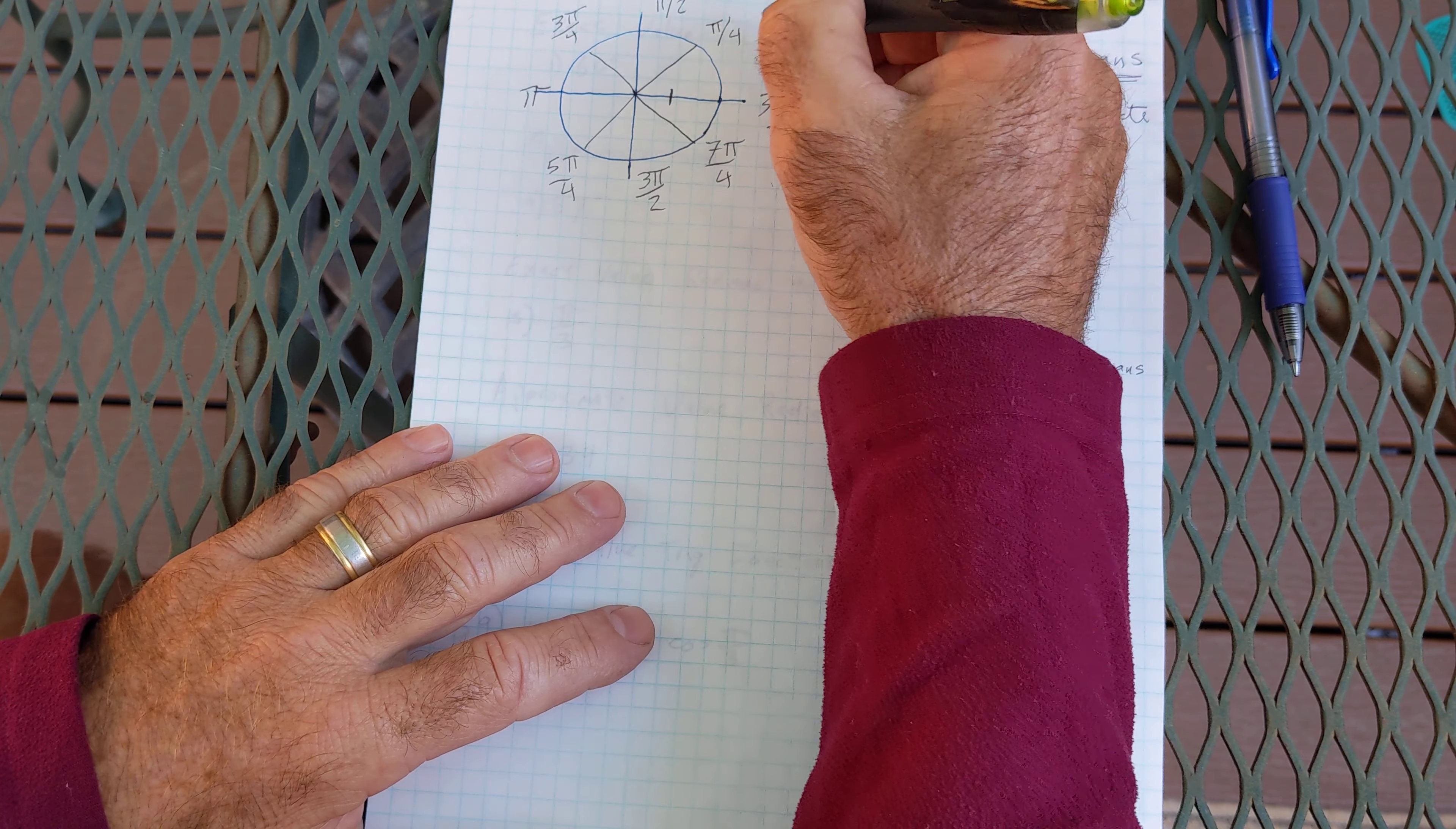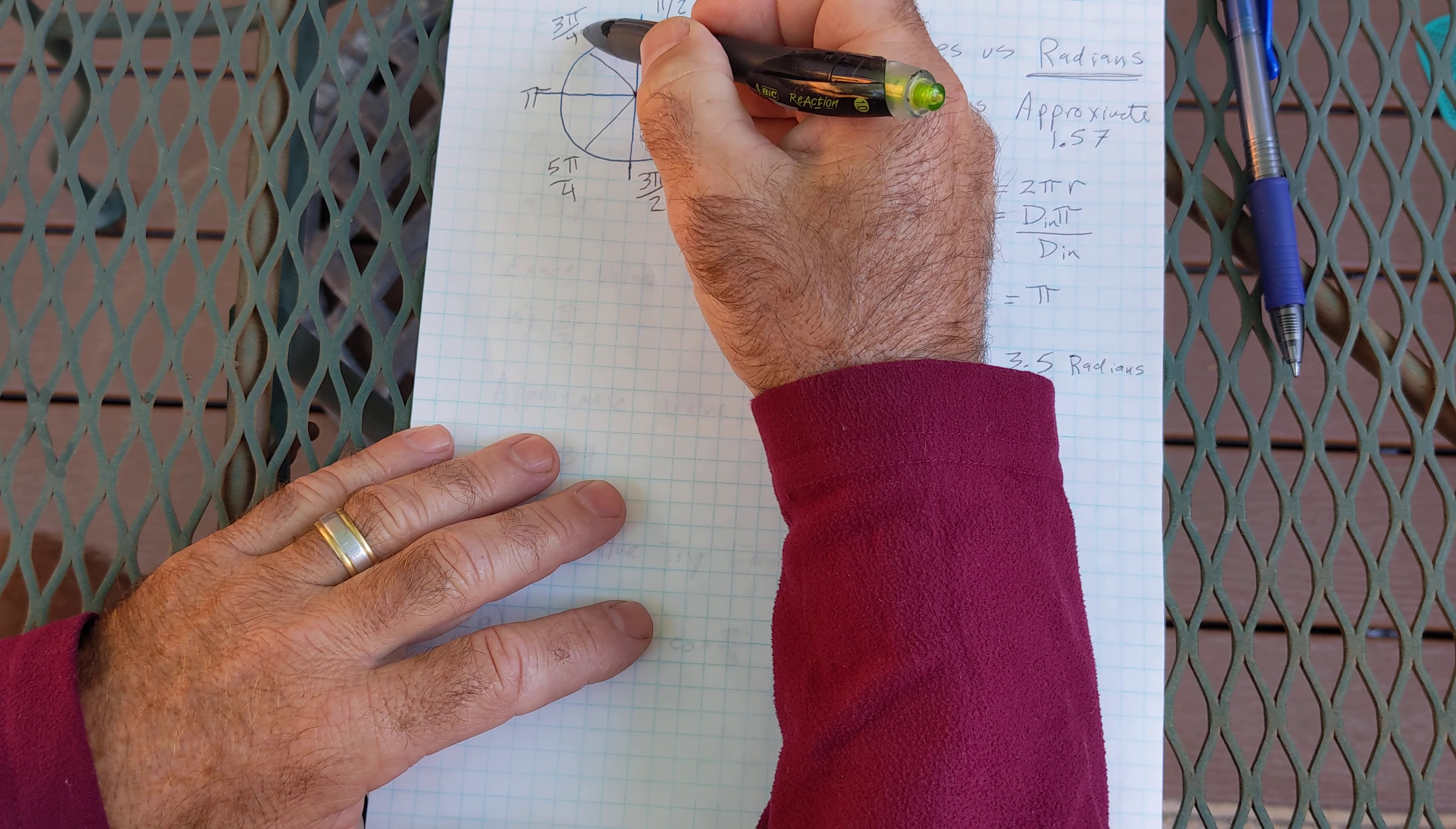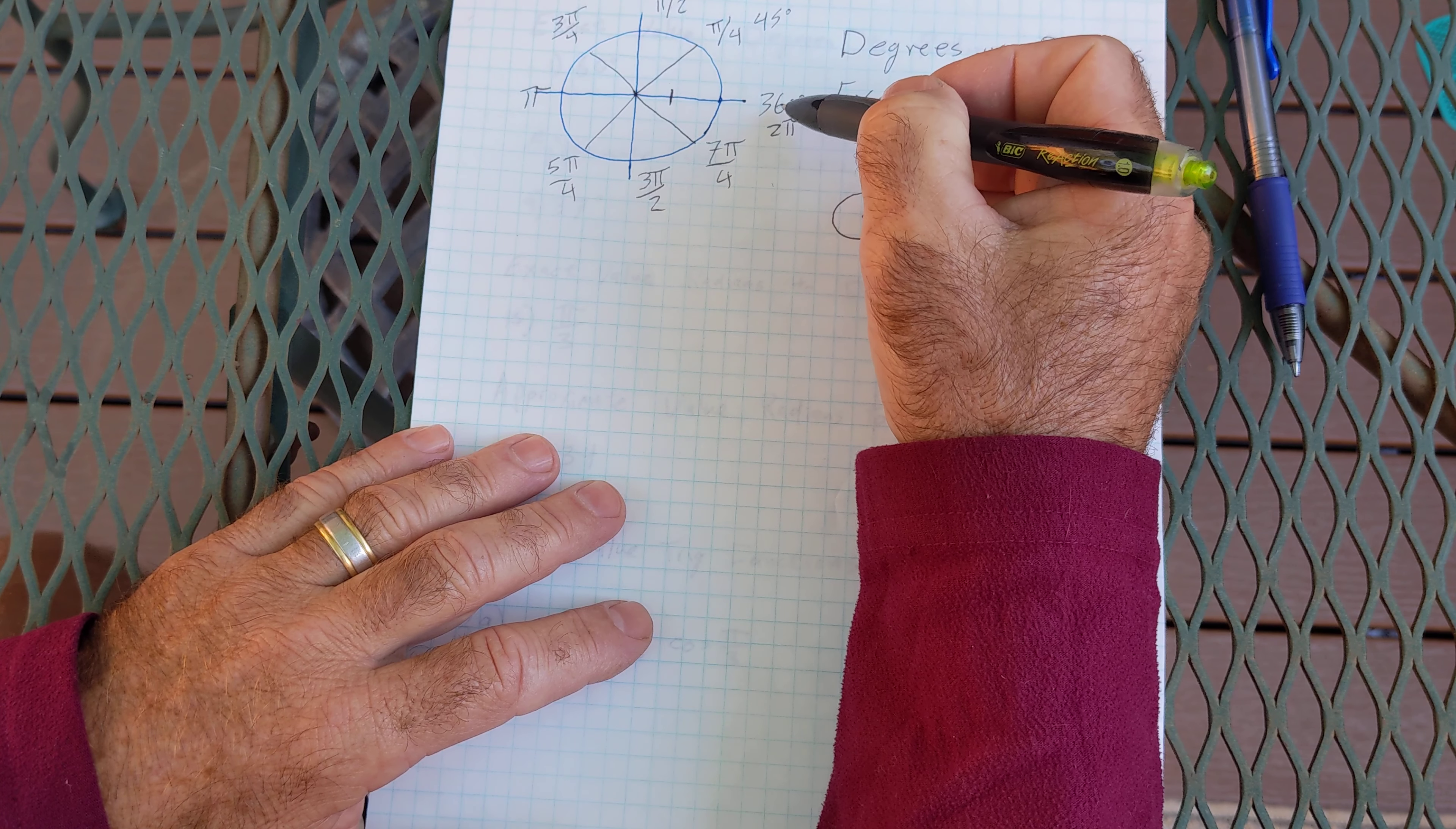So you might recognize that pi over 4 as 45 degrees, 90, 135, 180, 225, 270, 315 back to 360.